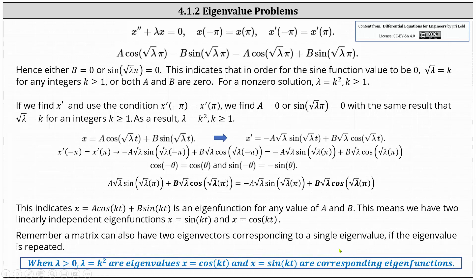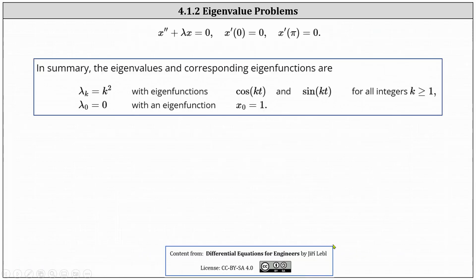In summary, the eigenvalues and corresponding eigenfunctions are: lambda sub k equals k squared, with eigenfunctions cosine kt and sine kt, for all integers k greater than or equal to one. Additionally, lambda sub zero equals zero is an eigenvalue with corresponding eigenfunction x sub zero equals one.